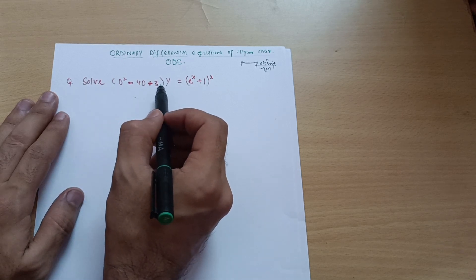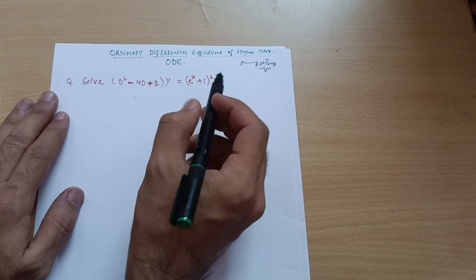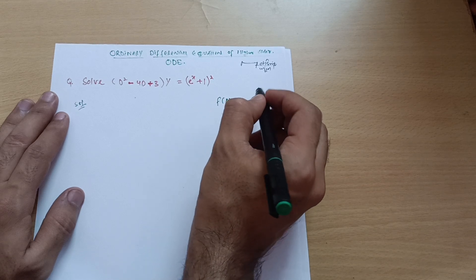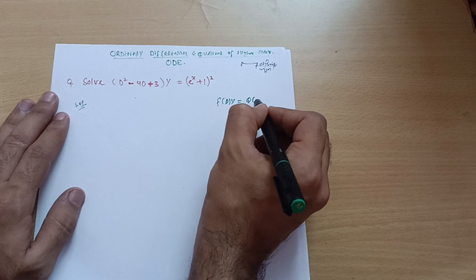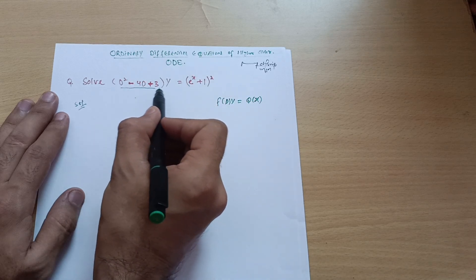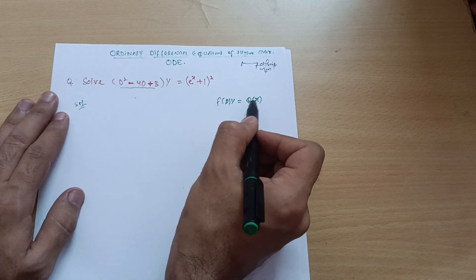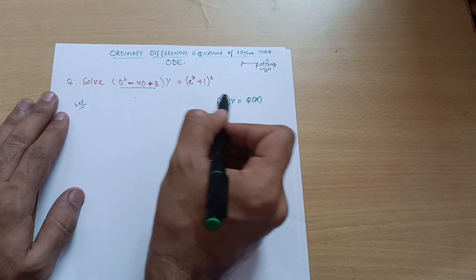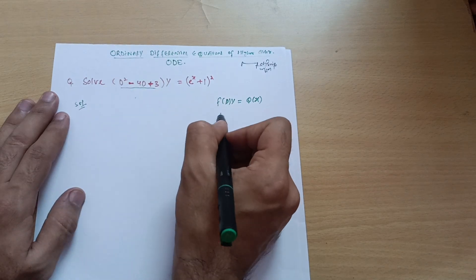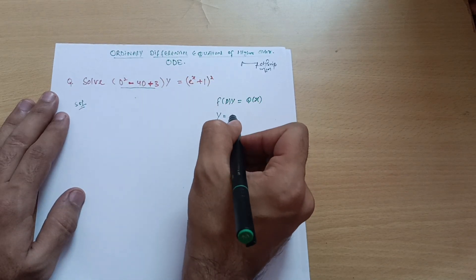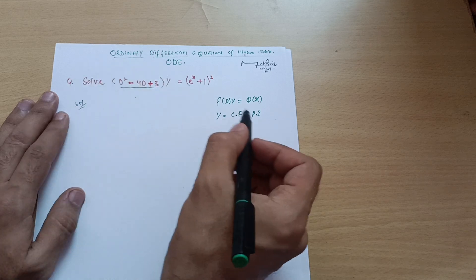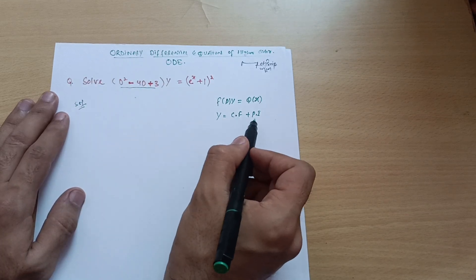The question is: (D² - 4D + 3)y = (e^x + 1)². The standard equation for the higher order differential equation is f(D)·y = Q(x). This equation matches that standard form — the left side is f(D)·y and the right side is Q(x). You should also know that the solution is always y = Complementary Function + Particular Integral. This is the general solution of the ordinary differential equation, where you calculate the complementary function and the particular integral.